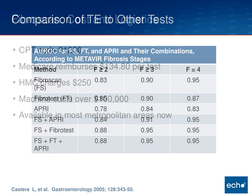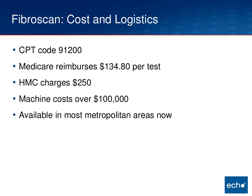What are some logistics of FibroScan? The CPT code is 91200. Medicare reimburses about $134 per test — most of that is for the administration, with interpretation being around $10 to $15. We charge $250 for commercial insurance, and self-pay is around $600. These machines are not cheap — about $100,000, or $125,000 if you add steatosis testing. They are increasingly available in metropolitan areas — Virginia Mason, Swedish, Harborview, and UW have it here, and on the east side there's a FQHC, CHAZ, which has it available as well. It's worth asking around if there's FibroScan available in your community.